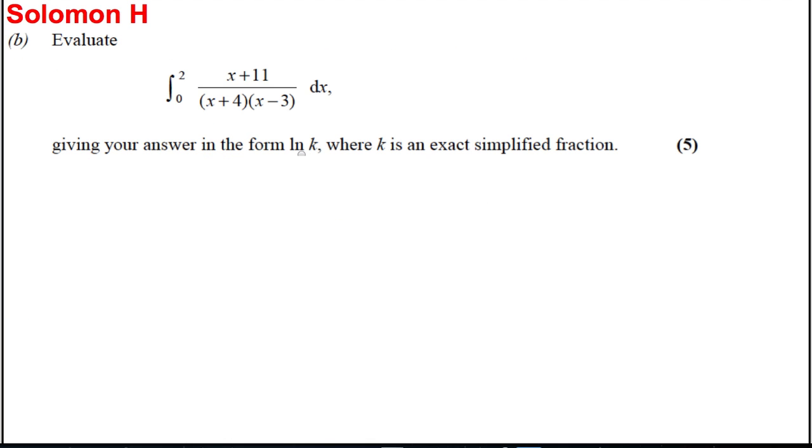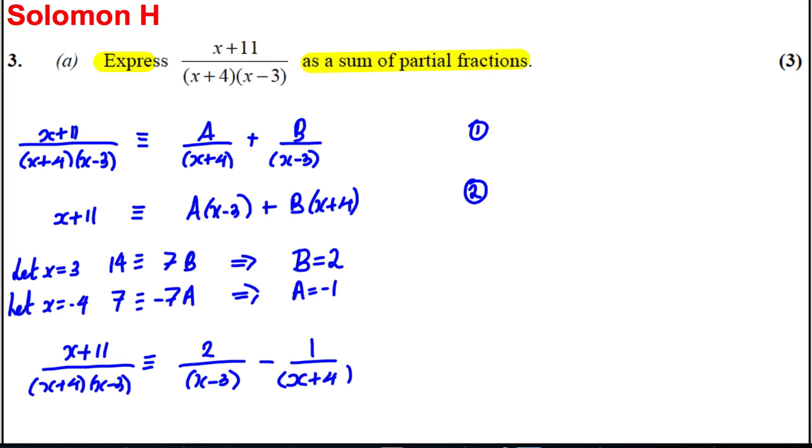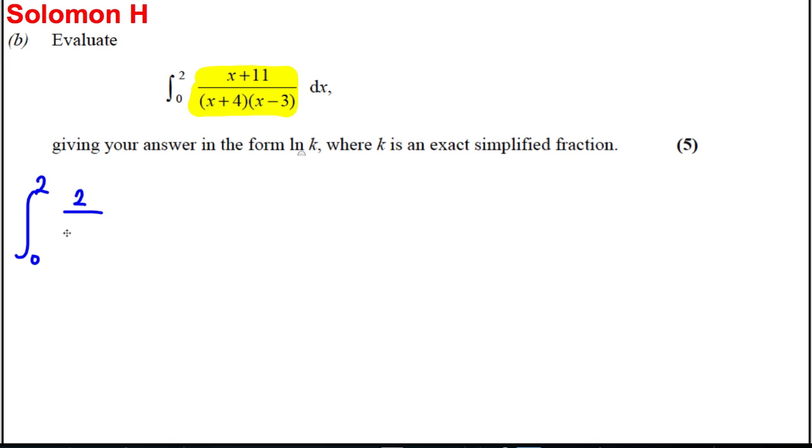Next part, we're going to evaluate the following integral. We're going to realize that in part A we expressed this as partial fractions. So we're going to straight away say that this is the integral between 0 and 2 of 2/(X - 3) - 1/(X + 4) dx.